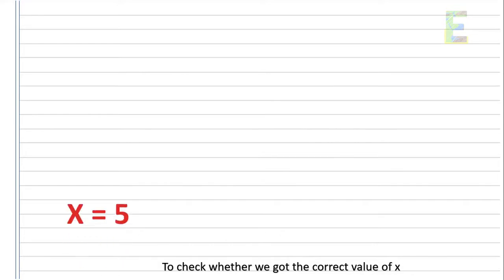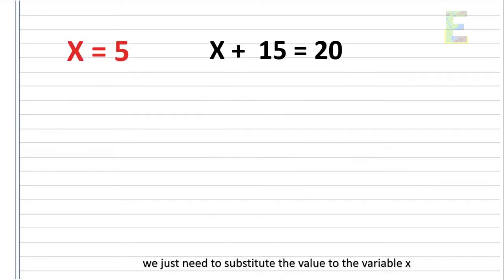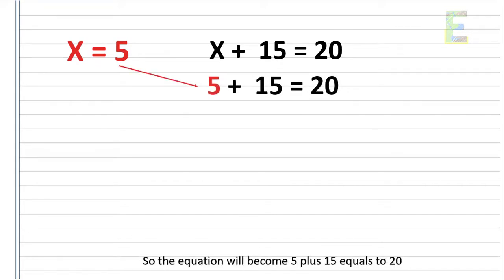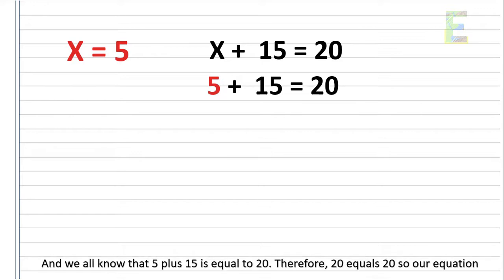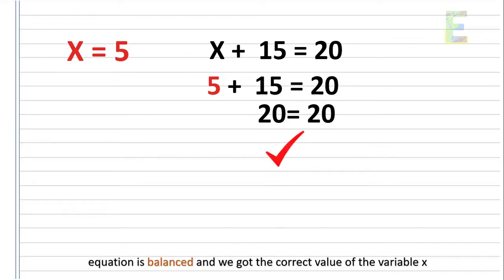To check whether we got the correct value of x, we substitute the value of the variable x. The equation becomes 5 plus 15 equals 20. And we know that 5 plus 15 is equal to 20. Therefore, 20 equals 20, so our equation is balanced and we got the correct value of the variable x.